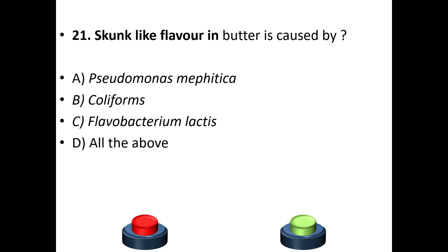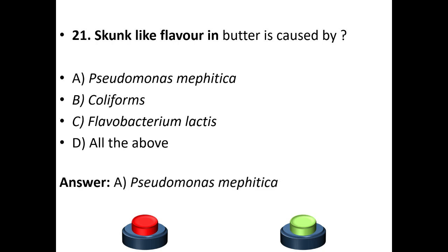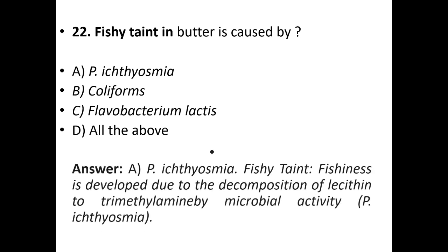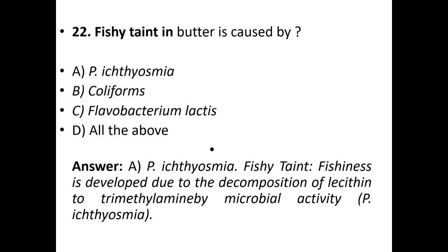Twenty-first question: skunk-like flavor in butter is caused by A: Pseudomonas mephitica. B: Coliforms. C: Flavobacterium malodoratum. D: All of the above. Answer is A — Pseudomonas mephitica. Twenty-second question: fishy taint in butter is caused by A: Pseudomonas ichthyosmia. B: Coliforms. C: Flavobacterium malodoratum. D: All of the above. Answer is A — Pseudomonas ichthyosmia. Fishiness develops due to the decomposition of lecithin to trimethylamine by microbial activity.